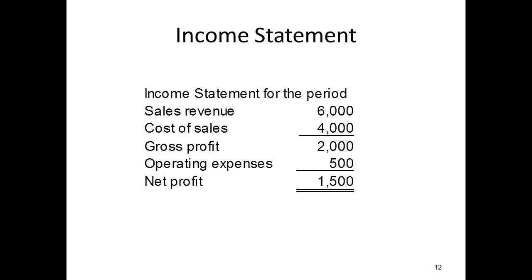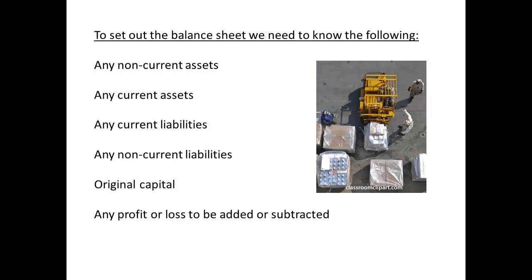The figure of £1,500 will be used later when we construct the balance sheet. We will now construct the balance sheet using the information from the transactions and also the information determined from the income statement. Here is the information that we need to know and the order in which we will make use of it.